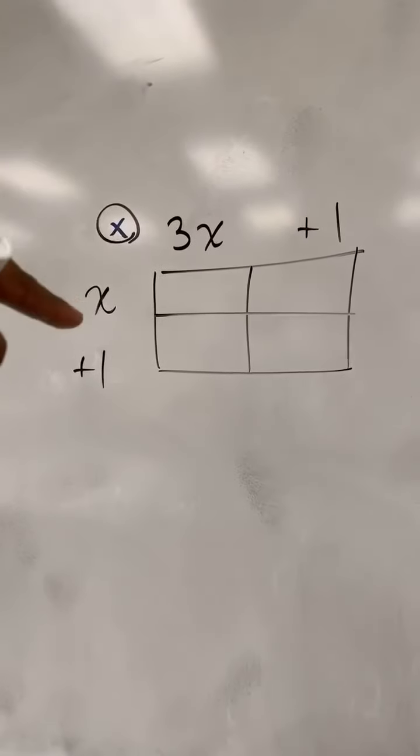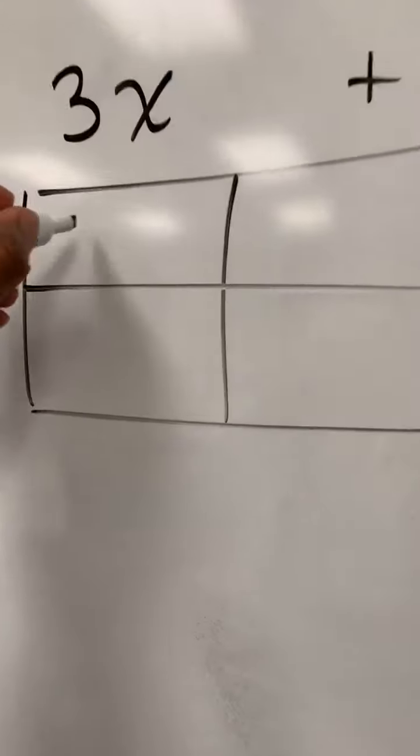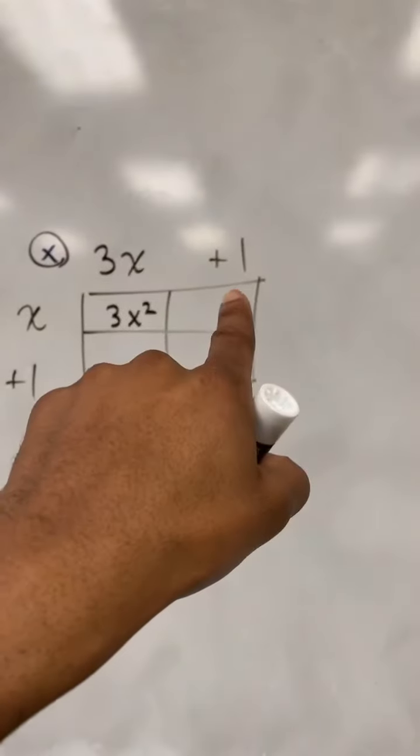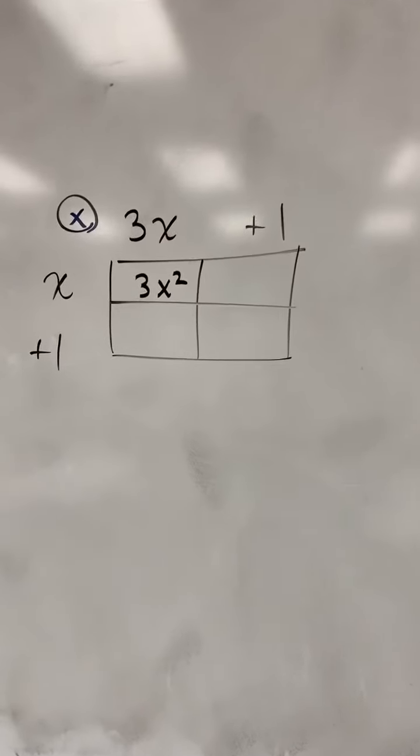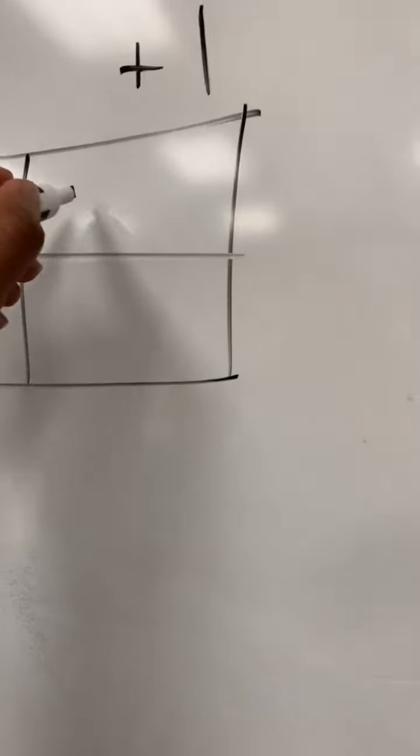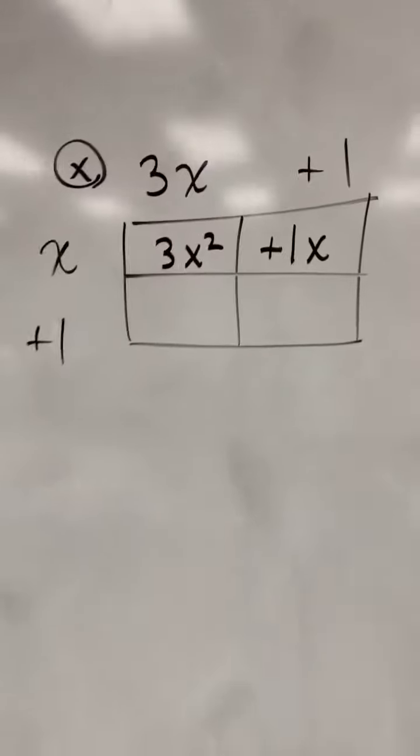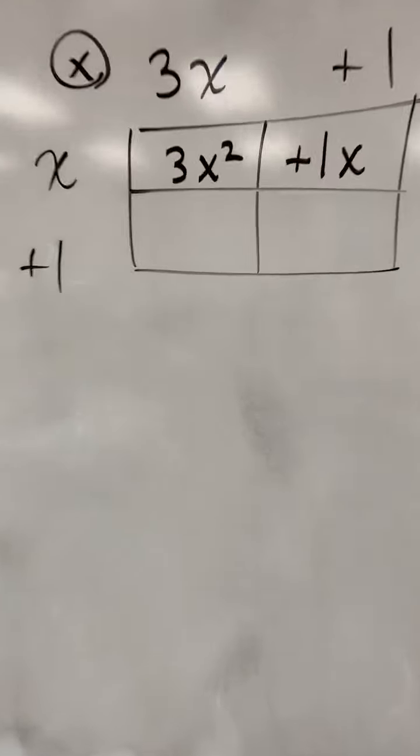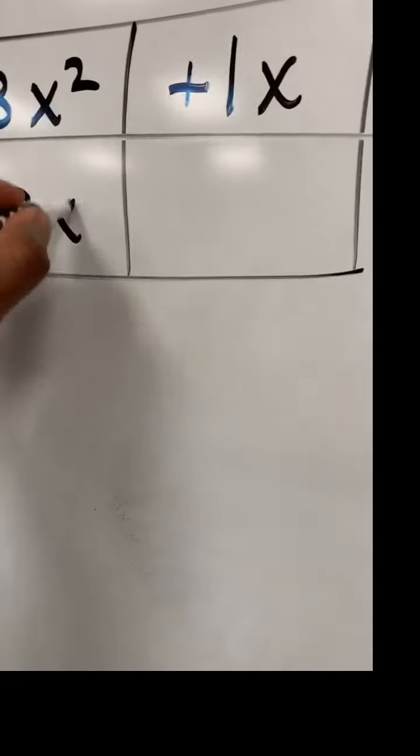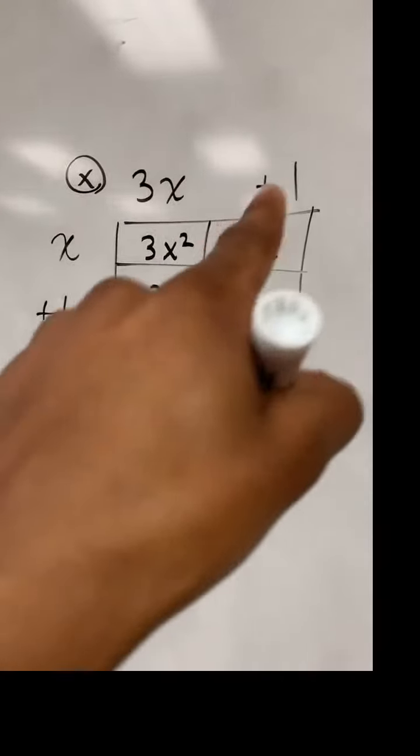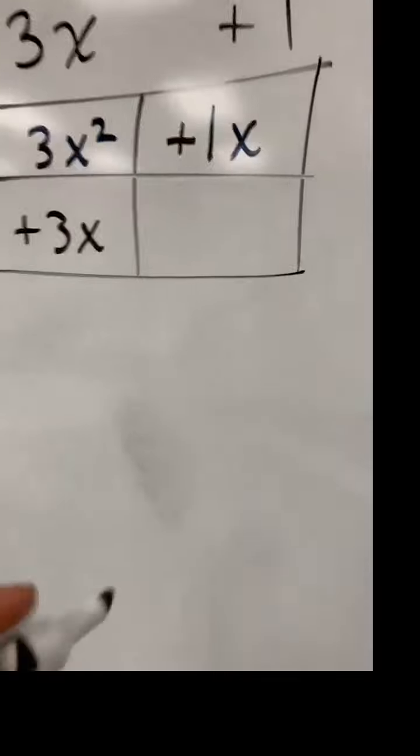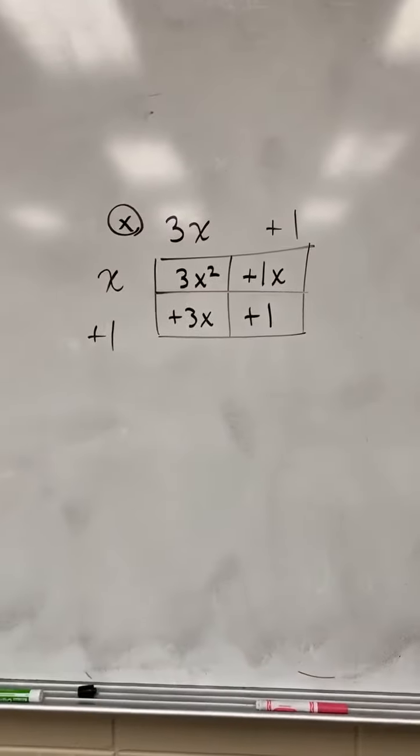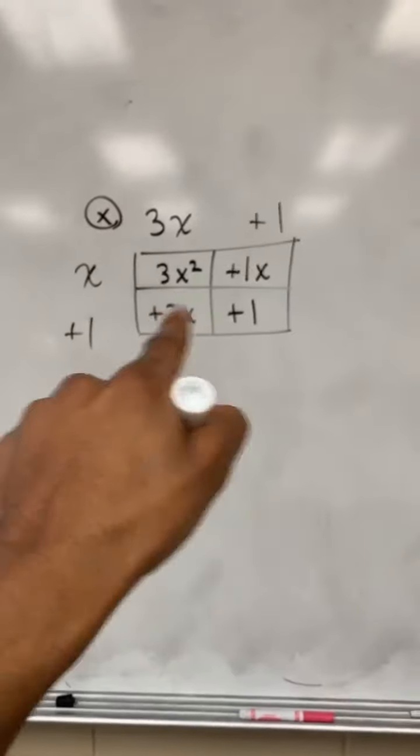All right, let's start with these two. 3x times x is 3x². Now we got this x times 1 is 1x, so I'm going to write my 1x and make sure my sign is on there, positive 1x. Now I'm looking at this 1 down here times that 3x, which is going to be 3x, and that's going to be a positive 3x. And now we have 1 times 1, which is a positive 1.